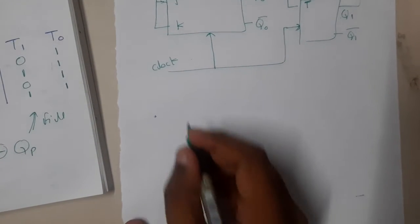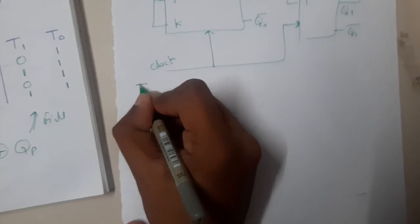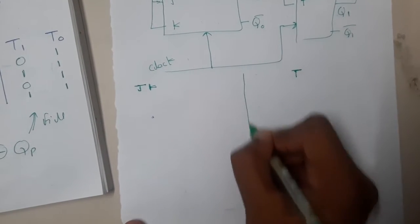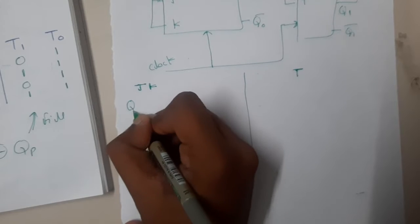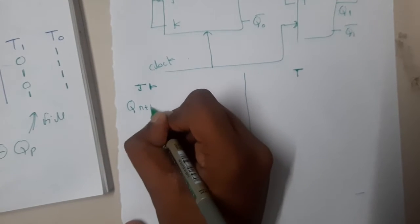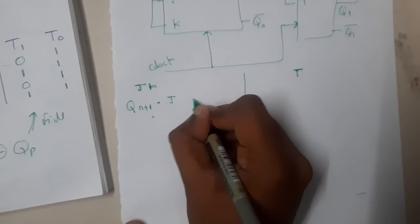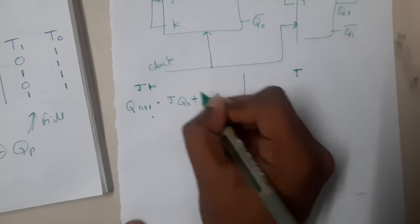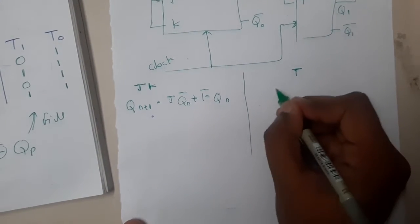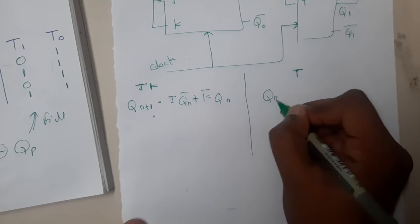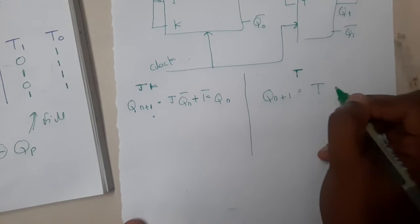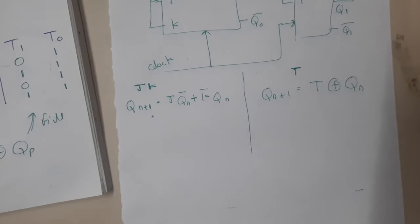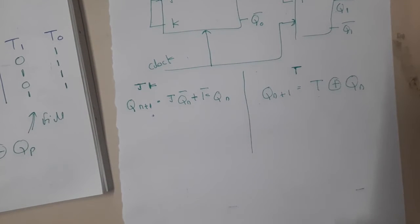Step one: identify the flip-flops in the diagram. We have two flip-flops — the first one is a JK flip-flop and the second is a T flip-flop. Write the characteristic equations: for JK, Q(n+1) = J·Q̄n + K̄·Qn; for T, Q(n+1) = T ⊕ Qn.